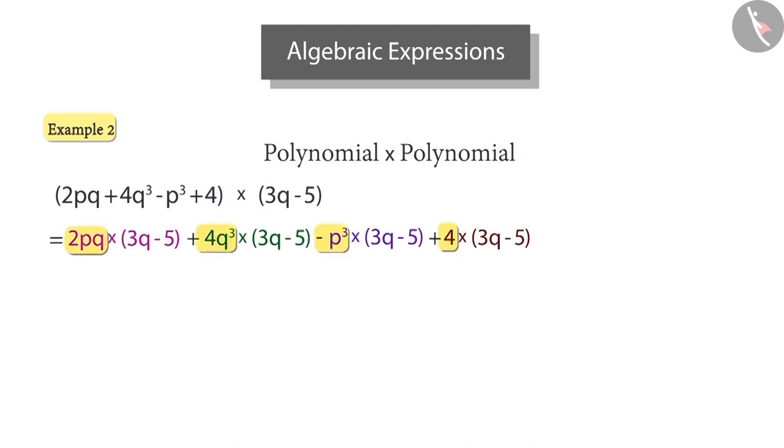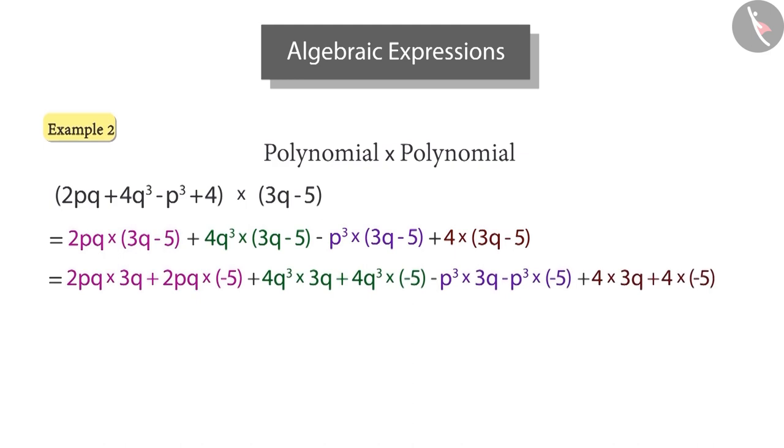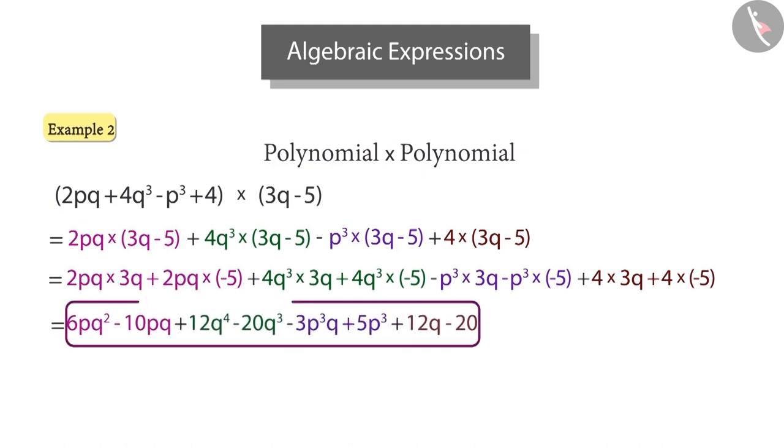Now, we have multiplication of a monomial and a binomial. So, we will solve this by using the distributive property like this. Thus, after multiplying these monomials, we get 6pq² - 10pq + 12q⁴ - 20q³ - 3p³q + 5p³ + 12q - 20. Look at these terms. There are no terms here that have the same algebraic factor. So, we do not have any like terms and hence it cannot be simplified further.